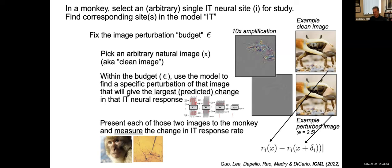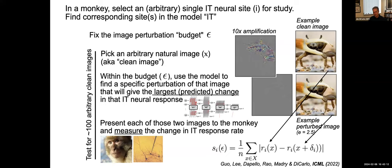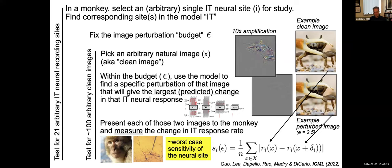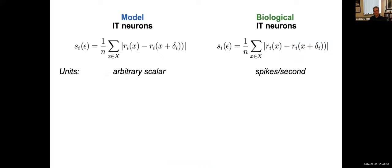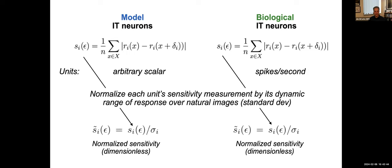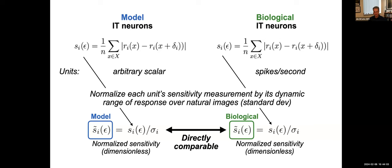We present each of these images — the original and the perturbed — to the monkey, randomly interleaved. We then compare: what does the neuron respond to those two images? We look for the absolute difference. We do this for 100 arbitrary start images and average over that to give a sense of average sensitivity — S — indexed by epsilon, the amount of budget available. This is essentially a measure of worst-case sensitivity. We do this not just for one neural site but for 21 sites. We normalize by the natural operating range — a standard deviation over a set of natural images — giving us a dimensionless quantity, S-tilde, which can be fairly compared between model neurons and biological neurons.